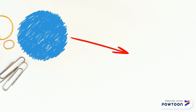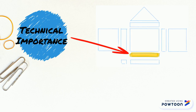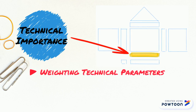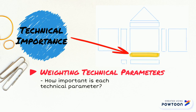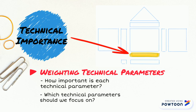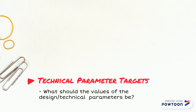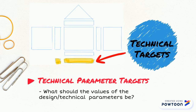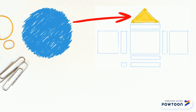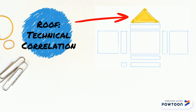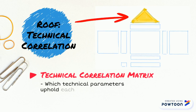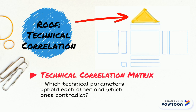Now, the technical importance room. Given limited time and resources, we want to prioritize our design effort. We need to know which technical parameters are most important. Parameter weights can be determined through algebraic operations using values in the VOC importance room and the relationship matrix. Another important question to ask is, what should the values of the engineering parameters be? In other words, what should be our technical targets? These values are found in the technical targets room. Lastly, the roof contains a technical correlation matrix. Which technical parameters uphold each other and which ones contradict? Contradictions imply trade-offs that should be considered in a design.